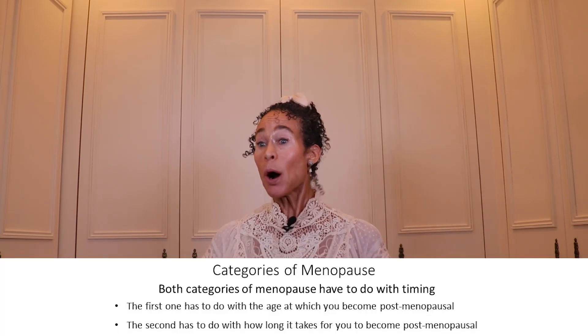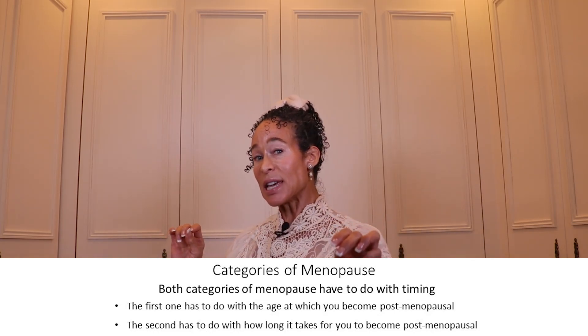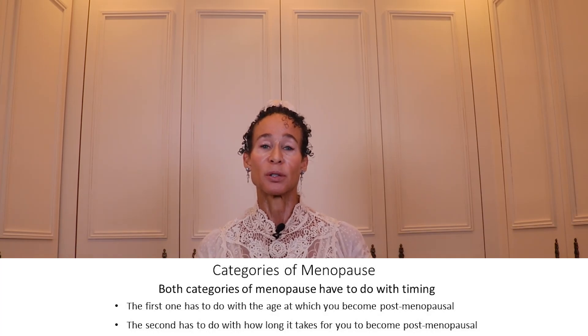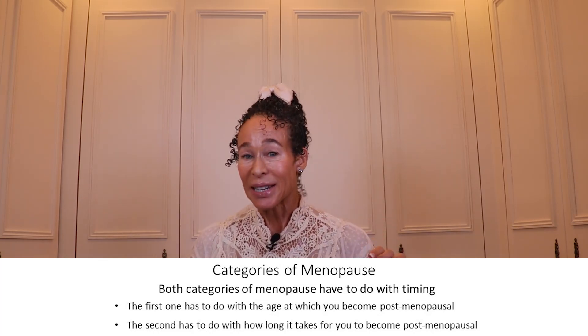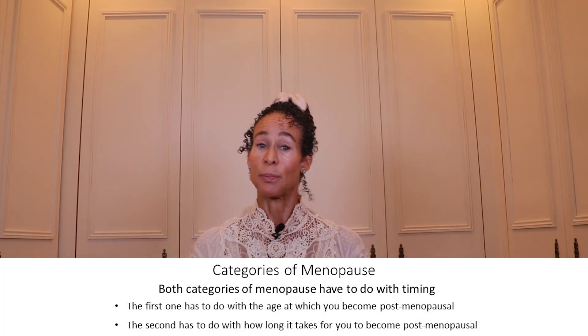Postmenopause has two broad categories that define its type, and both categories have to do with timing. The first has to do with the age at which you become postmenopausal, and the second has to do with how long it takes for you to become postmenopausal.